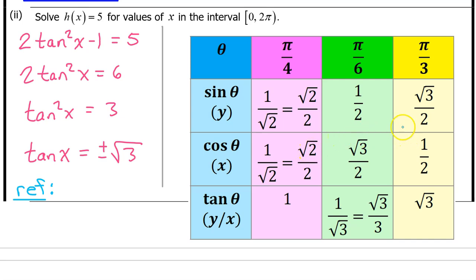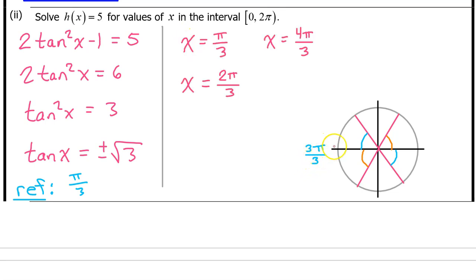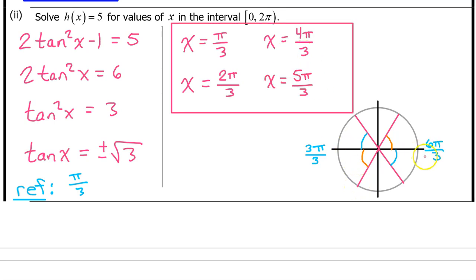Hopefully you have memorized these 9 trig facts. We find the reference angle by ignoring the plus or minus and asking: the tangent of what angle equals radical 3? The tangent of π/3 is radical 3, so π/3 is the reference angle — the positive angle between the terminal side and the x-axis. Since tangent is allowed to be positive or negative, we find solutions in all four quadrants: π/3 in Q1, 2π/3 in Q2, 4π/3 in Q3, and 5π/3 in Q4.